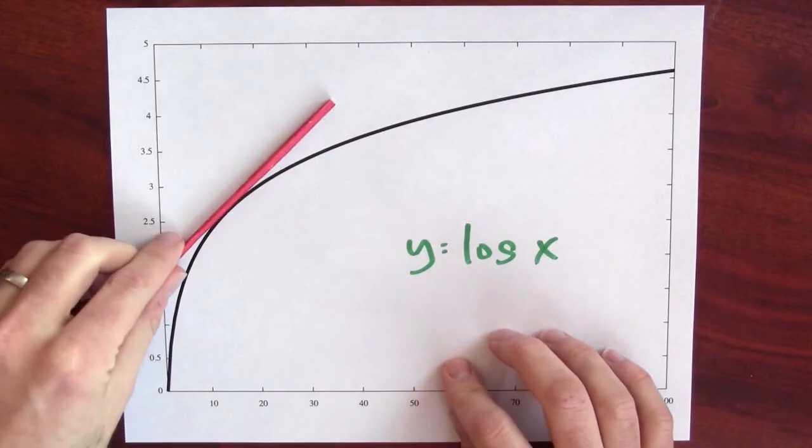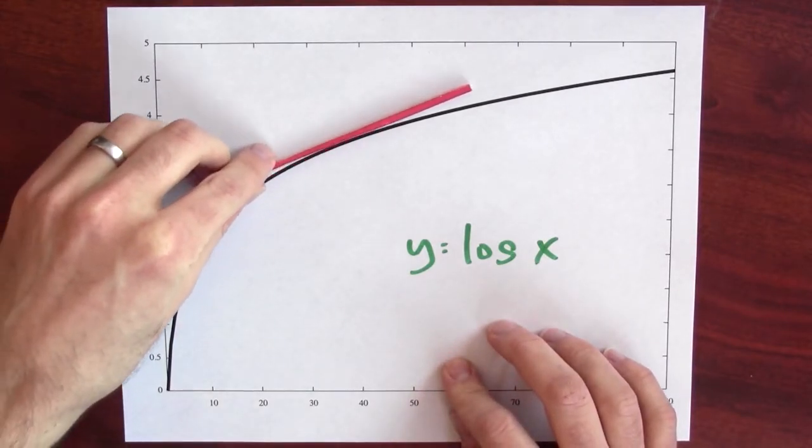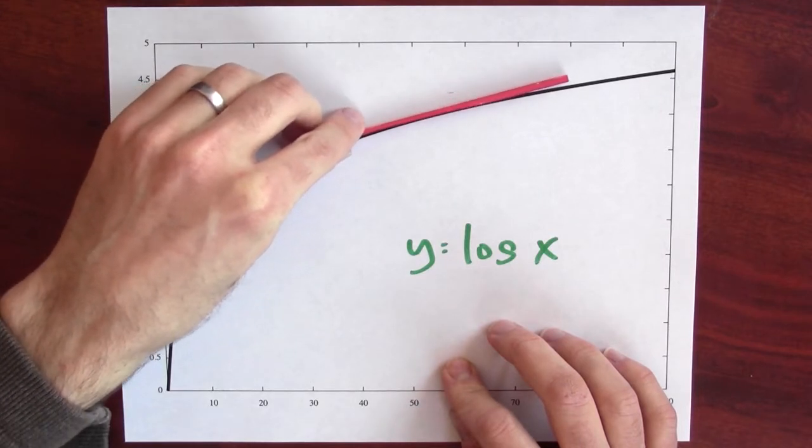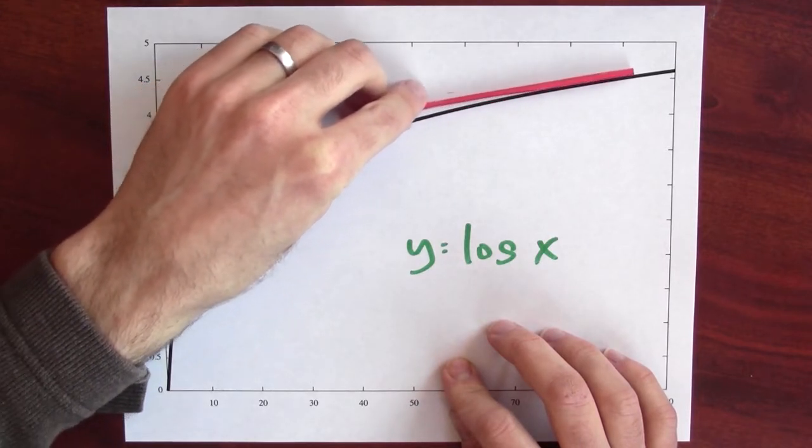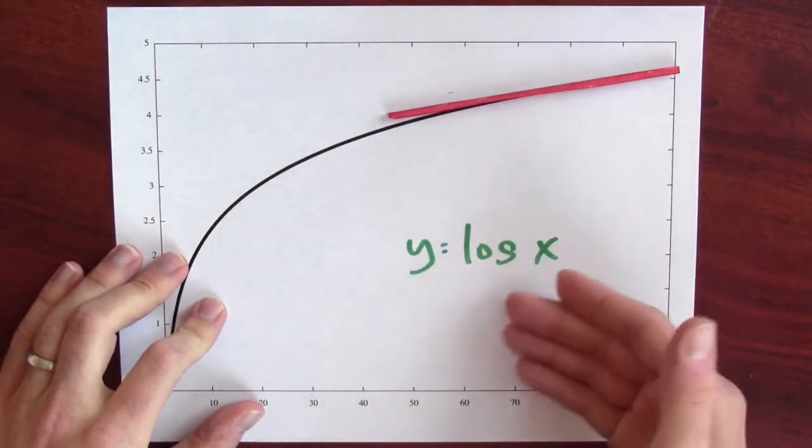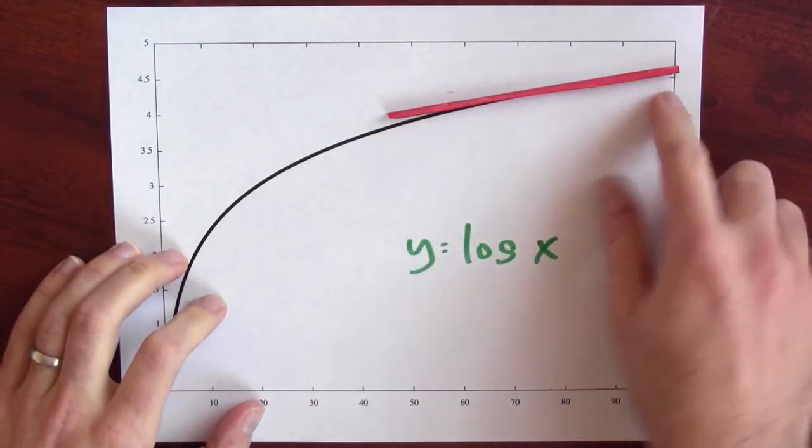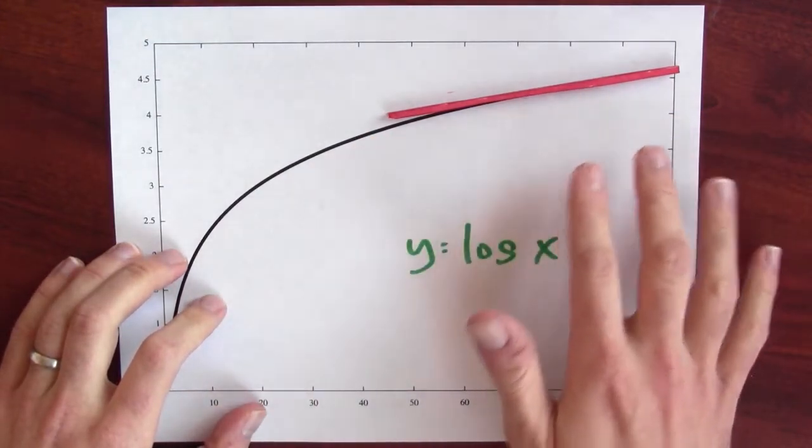If I put down a tangent line and I start moving the point that I'm taking the tangent line at to the right, you can see the tangent line slope is getting closer and closer to 0. And of course, that's reflected by knowing the derivative of log x is 1 over x. So if x is really big, the tangent line at x is really close to 0 in slope.